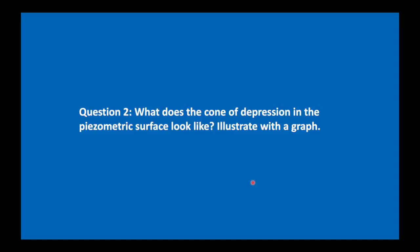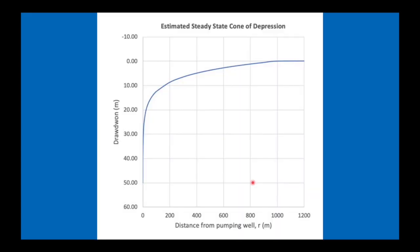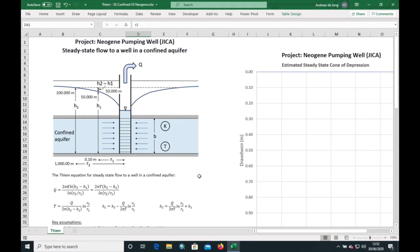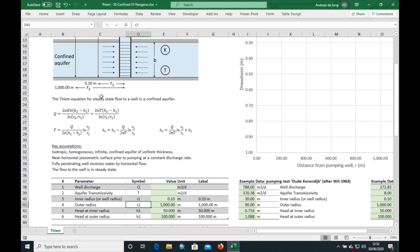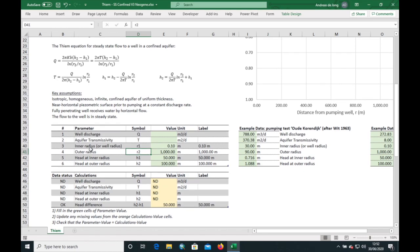Question number two: what does the cone of depression in the piezometric surface look like? Illustrate with a graph. So this is the graph that we want to make. Let's go first to the Thiem calculator, which is the little tool I made in Excel. You can probably recognize our diagram of the confined aquifer here. If we move down we can see the Thiem equations and also the key assumptions which are very important. Don't ever forget that the Thiem equation only applies if all these assumptions are correct.